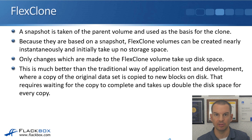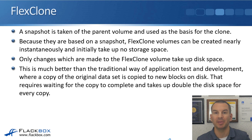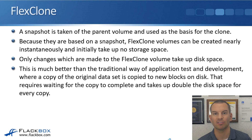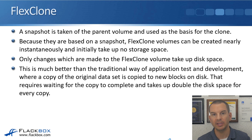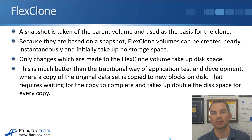The way this works is that a snapshot is taken of the parent volume and used as the basis for the clone. Because they're based on a snapshot, FlexClone volumes can be created nearly instantaneously and initially take up no storage space. Only changes made to the FlexClone volume after you've created it take up space — just like with normal snapshots, it's only when changes are made to the active file system that they start to take up space.